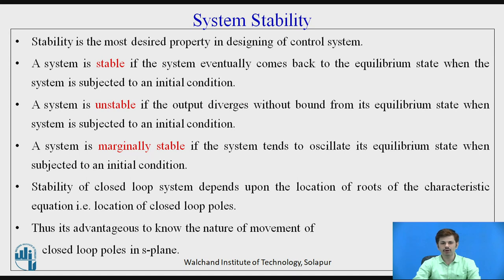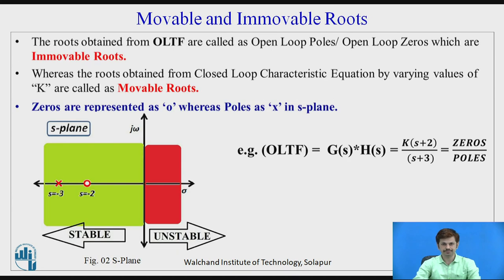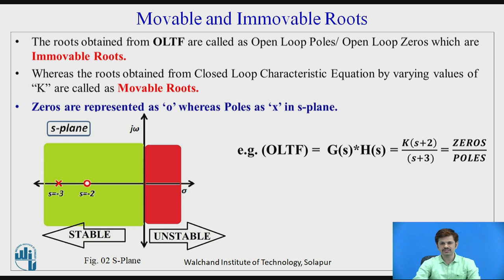It is advantageous to know the movement of closed loop poles in the S-plane, which is found using the closed loop characteristic equation. The roots obtained from open loop transfer functions represent open loop poles or open loop zeros, and these are called as immovable roots, whereas the roots obtained by varying the value of K are movable. Zeros are represented by a circle symbol and poles by a cross symbol in the S-plane. In the S-plane, the x-axis represents the real part and the y-axis represents the imaginary part.